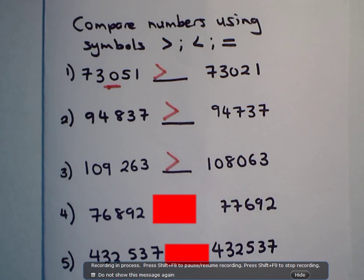Then the last one. So, the last one. Okay, let me just get rid of this. It's less than sign. So, then you have the last one. The last one is both exactly the same numbers. So, you can have an equal to sign. And that's all you need to know for comparing numbers using the symbols greater than, less than, and equal to.